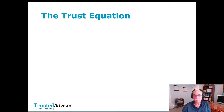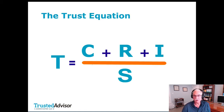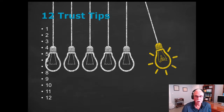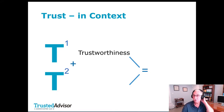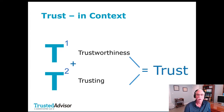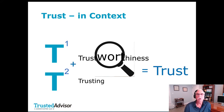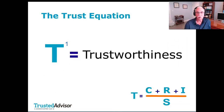Many of you already know about the trust equation. Trustworthiness is a function of credibility plus reliability plus intimacy, divided by self-orientation. Trust itself is a composite of two things: trustworthiness, which we'll focus on today, and trusting. The combination of those two yields what we call trust. There's also the whole issue of risk-taking and trusting, which really kicks off a trust relationship to begin with.